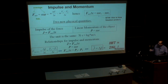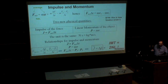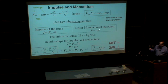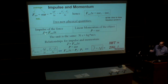The second physical quantity is the momentum, or linear momentum of an object — I'm just going to say momentum. It equals the product of mass and velocity. Because velocity is a vector and mass is a scalar number, this product has a direction, which means linear momentum has a direction. It's a vector. The same is true for the impulse of the force.